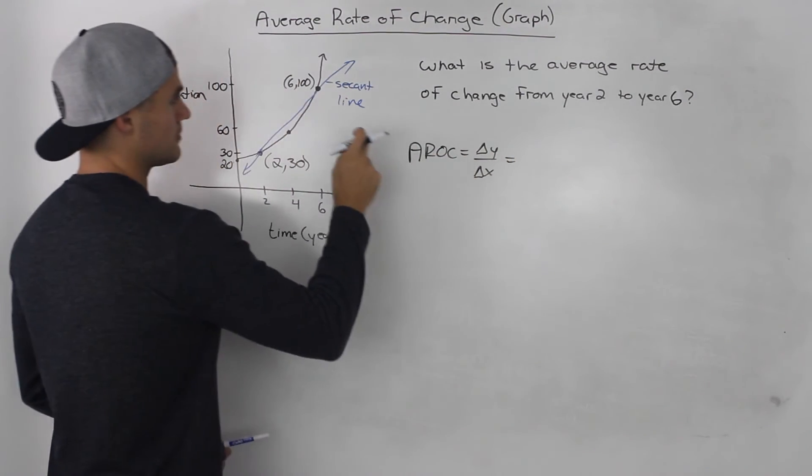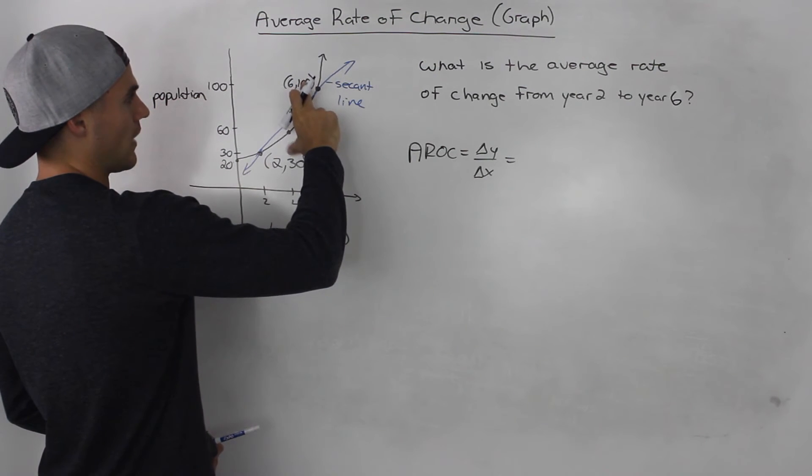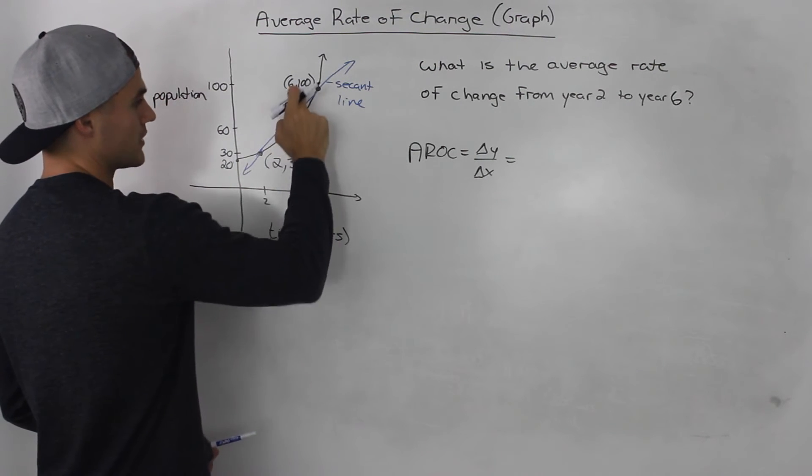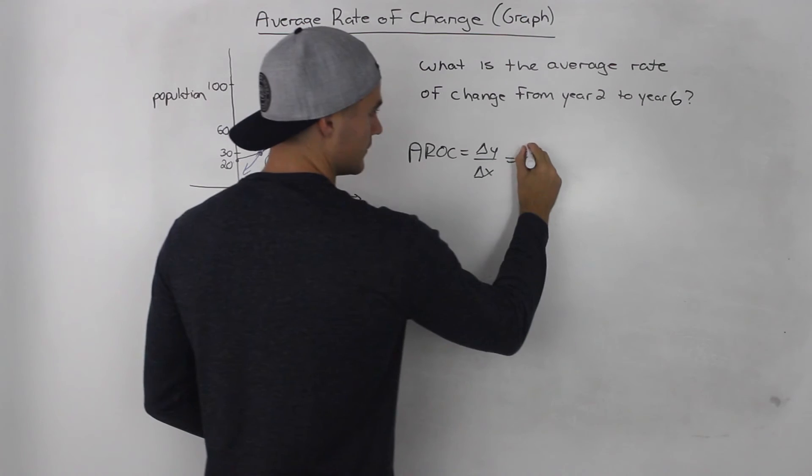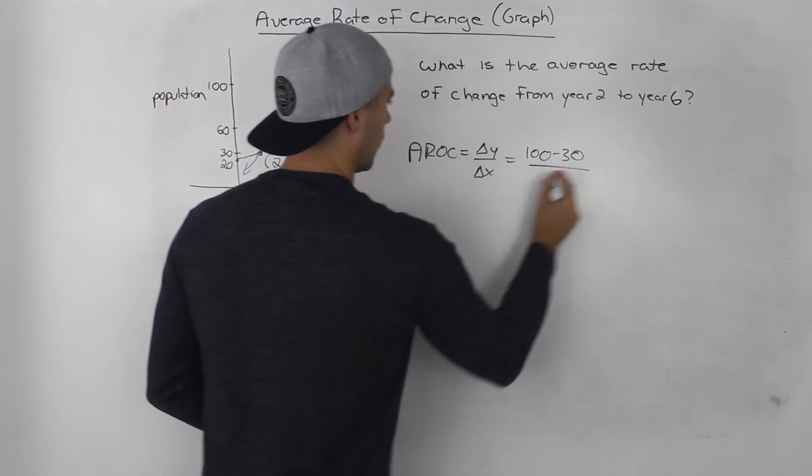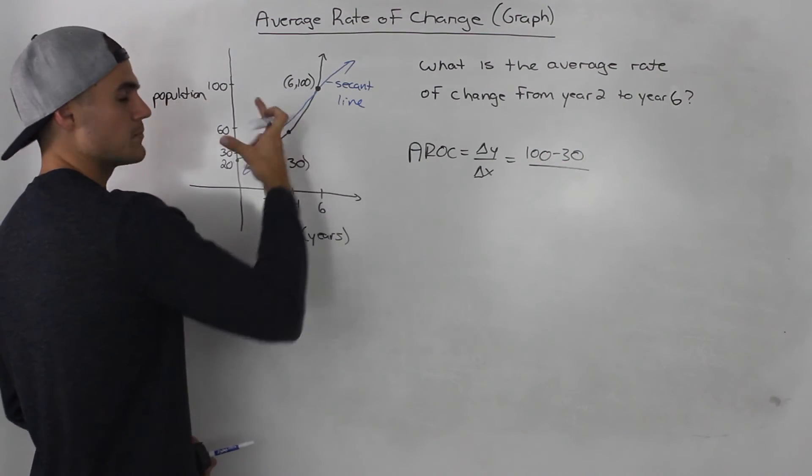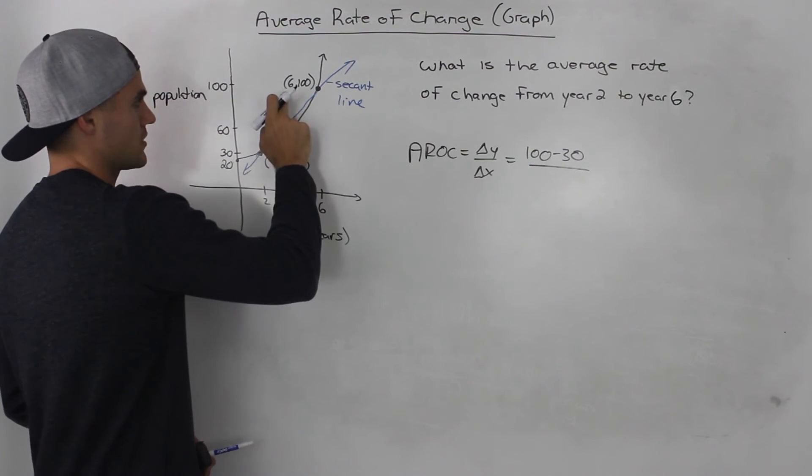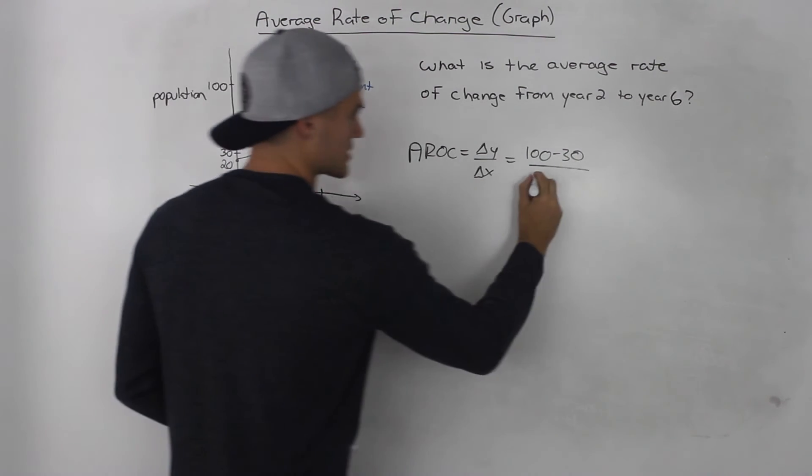So it's basically going to be the difference in the y-value, so y2 minus y1, so 100 minus 30, over the difference in the independent variables, the time, so x2 minus x1, 6 minus 2.